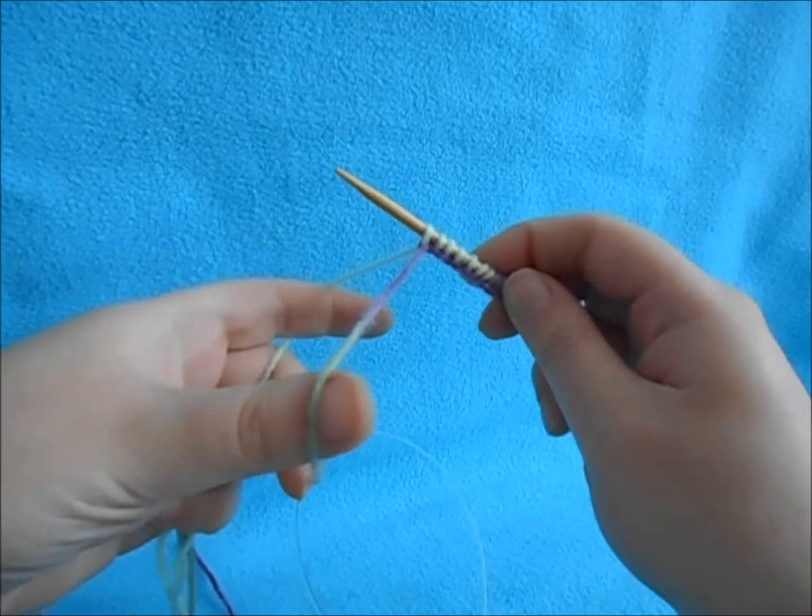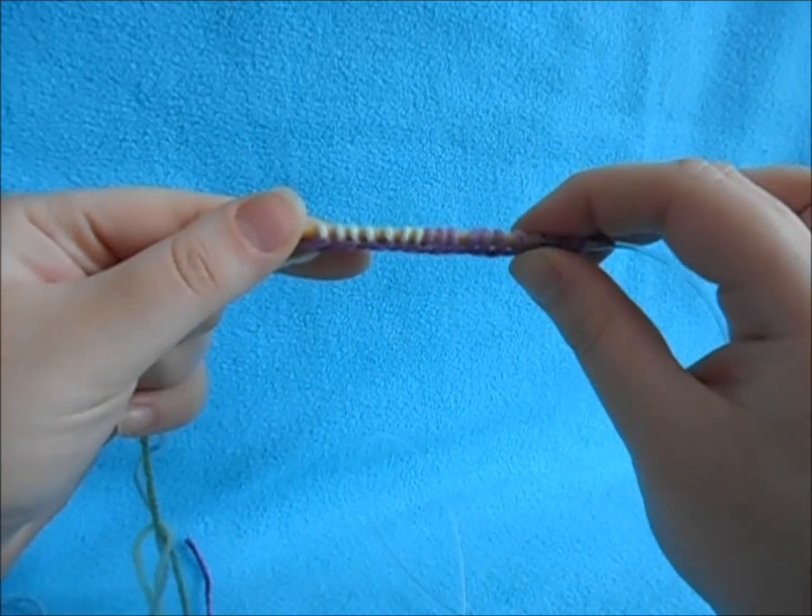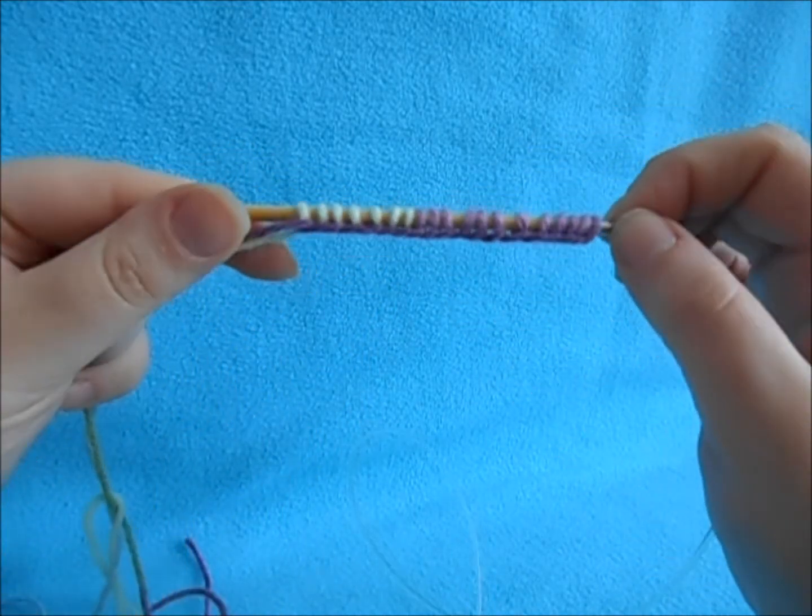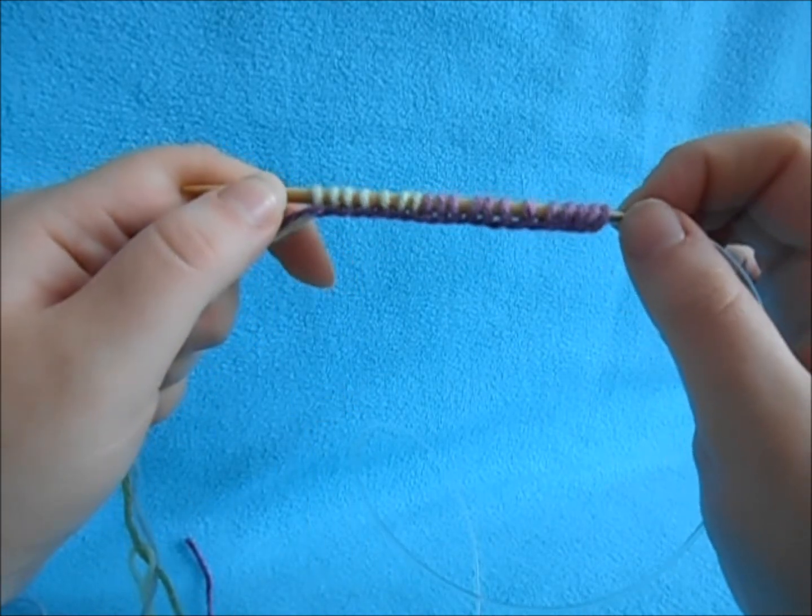And you just keep casting on like this until you get the right amount of stitches that you need for your project. So I hope this was helpful, and you learned how to work the long tail cast on. And I'll see you next time.